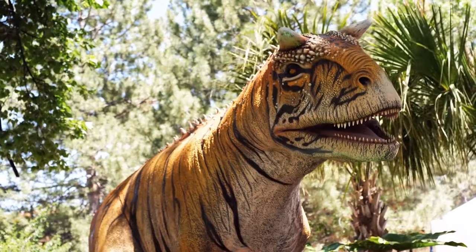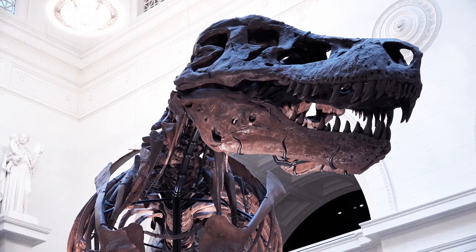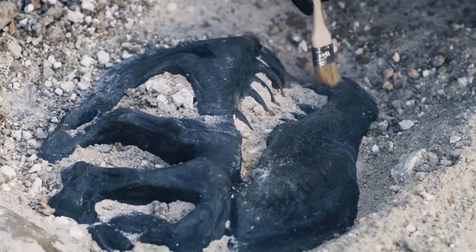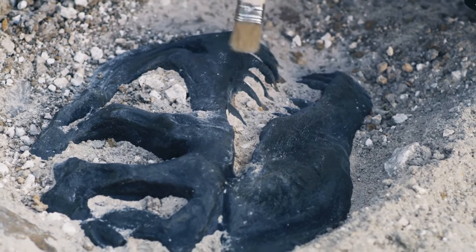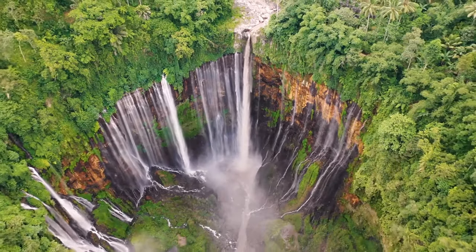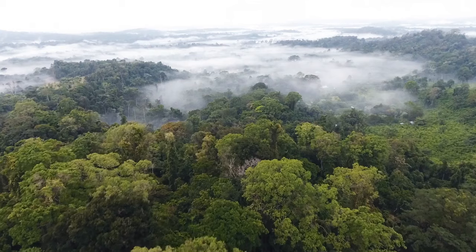Well, dinosaurs would have had to survive a lot more than an asteroid to be living nowadays. About 55 million years ago, the temperatures on the planet rose. The climate became 14 degrees Fahrenheit hotter than it is today. Rainforests flourished, and vegetation was abundant.